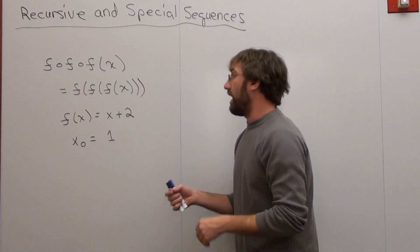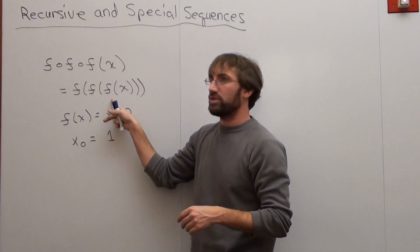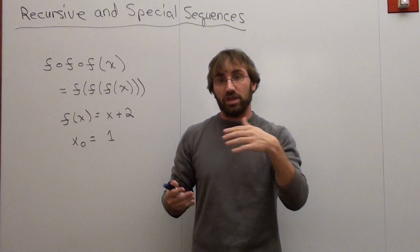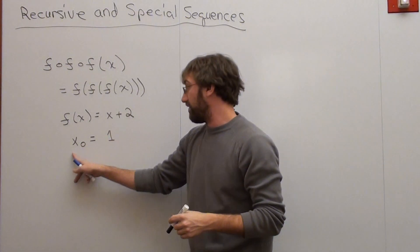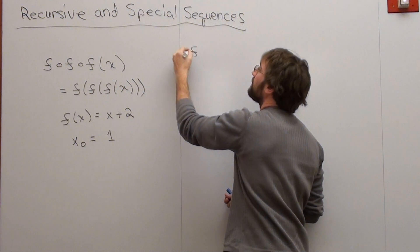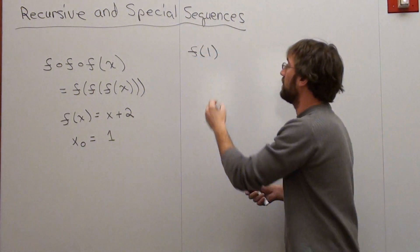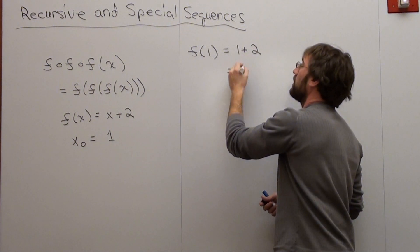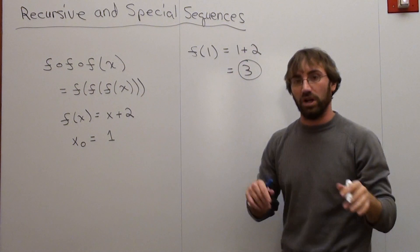So I've got to do this three times, because there's three f's. Do it once, do it twice, do it three times. So the first one we're going to do is f of x naught, or f of 1. And when we do that, we have f of 1 equals 1 plus 2. So that's equal to 3. We did that once.